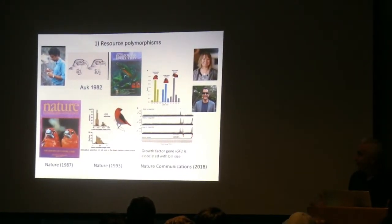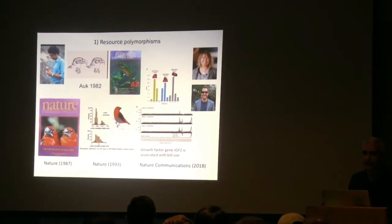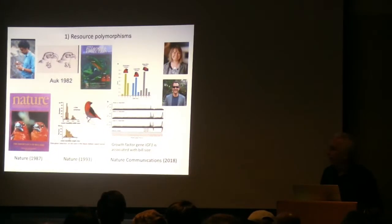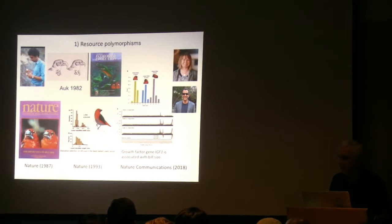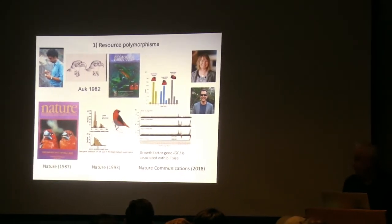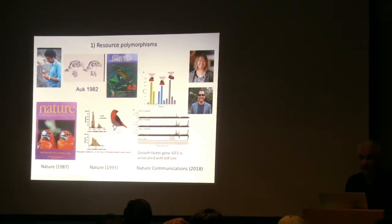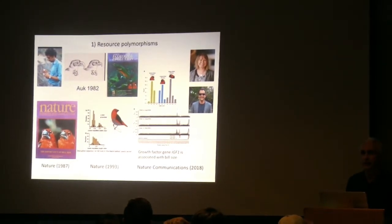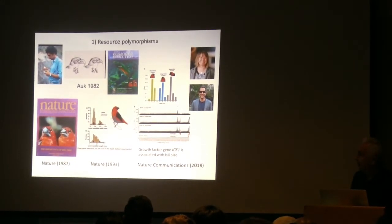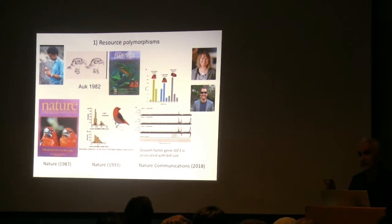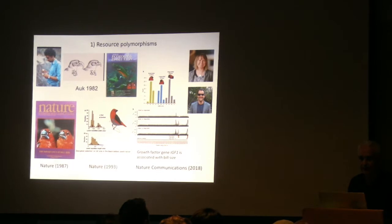Since I was an undergraduate I've been fascinated with resource polymorphisms, both in terms of differential niche utilization but also their importance in speciation and incipient speciation. My first paper on this goes back 37 years — a paper I published in AUK in 1982 — which looked at the hookbill kite, a neotropical species of raptor that shows bill size polymorphism driven by different sizes of tree snails on which it feeds.